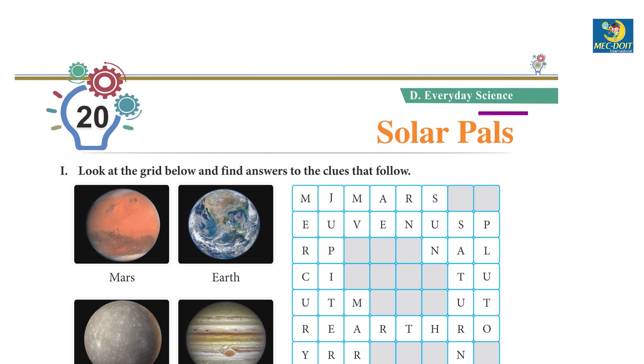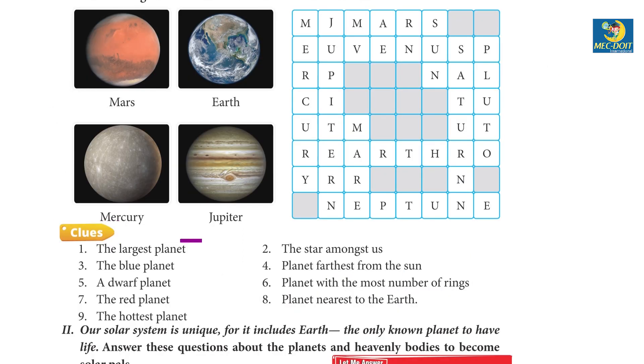Chapter 20: Solar Pals, Part 1. Look at the grid below and find answers to the clues that follow. Clues: 1. The largest planet - Jupiter. 2. The star among us - Sun. 3. The blue planet - Earth.